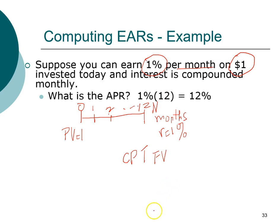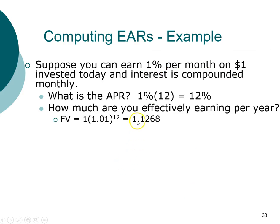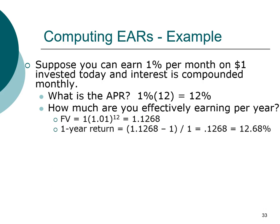Pause the video now and do the calculation. Did you get $1.1268? Good job. Since your future value is $1.1268, that means the interest that you earn is $0.1268. You invested $1 and earned $0.1268 in interest, meaning your actual one-year return is 12.68%. In fact, that is your effective annual rate.